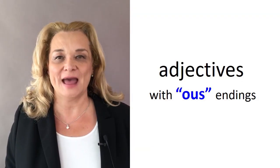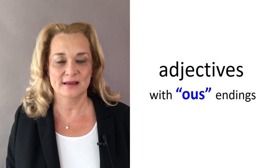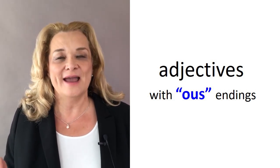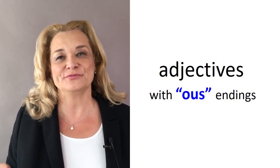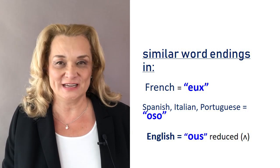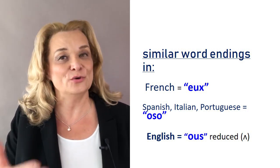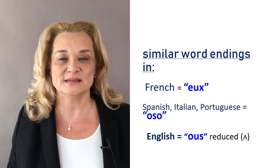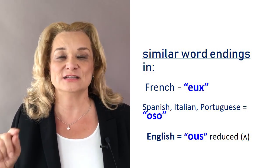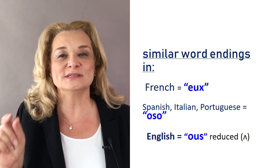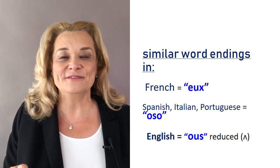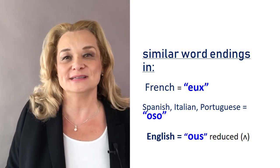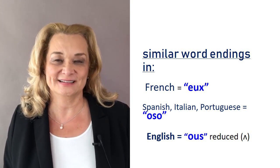The next 10 words are all adjectives that end in O-U-S. I want you to pay special attention to how the O-U-S is pronounced. Especially if your native language is French, Spanish, Italian, or Portuguese — the vowels are similar in your language but pronounced very differently. In French it's E-U-X, in Spanish, Portuguese, and Italian it's O-S-O. In English, that O becomes reduced and becomes U. But even if your native language is not one of those, it's still really important to pay attention to how syllables are stressed and reduced. Let's get started.